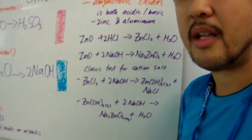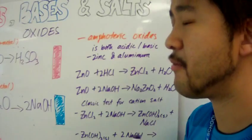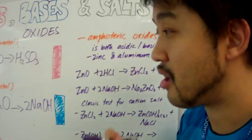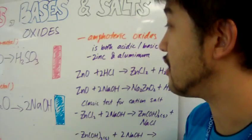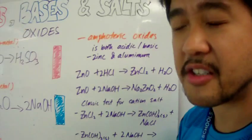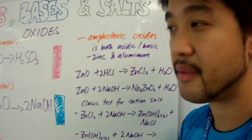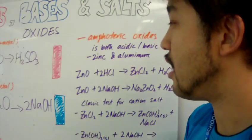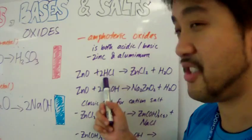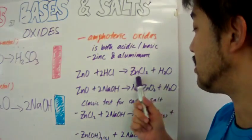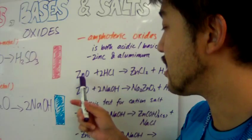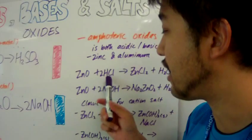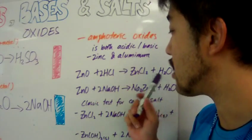Finally, let's talk about amphoteric oxides. Amphoteric oxides are very special. They can behave like an acidic oxide and they can also behave like a basic oxide. They are both acidic and basic. The classic example used in first year level chemistry is zinc and aluminum. Zinc oxide can react with an acid to form a salt and water. This means that zinc, in this instance, acts like a basic oxide because it's reacting with an acid to form salt and water.